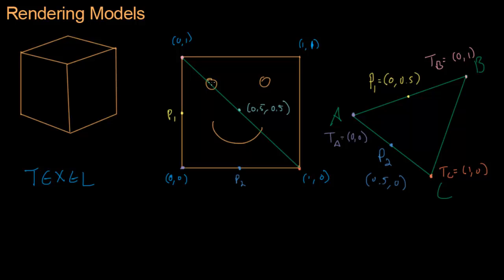So every interior point on this triangle will have a corresponding point in this texture coordinate system. Now, the video card actually does all this for us. We don't, all we have to do is specify these texture coordinates for each vertex. And then the shader, which I will get to later, will do all this interpolation for us and figure out which texel to draw at which point.